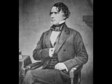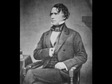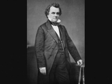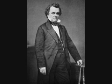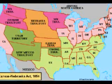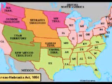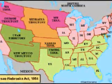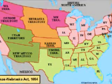Immediately after Franklin Pierce was sworn in, a man named Stephen Douglas from Illinois — the Little Giant as they called him — proposed what was called the Kansas-Nebraska Act. As you can see, the orange territories of Kansas and Nebraska were going to be given the ability to choose whether or not slavery would exist. Again, popular sovereignty — once people moved into that territory, they could vote whether or not they wanted slavery.